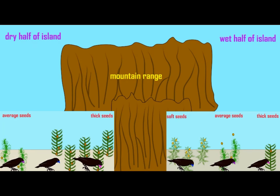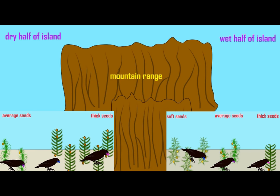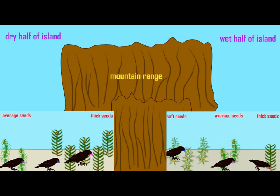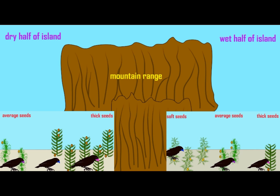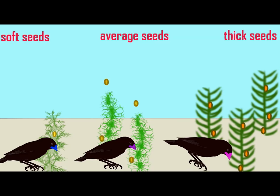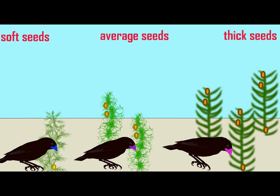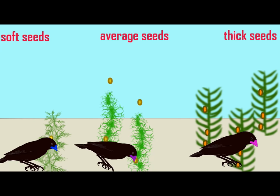Finally, there is the example of disruptive selection. Let's imagine a scenario in which different populations of finches live on perhaps different islands in the Galapagos, or if a mountain range separates two populations of finches.